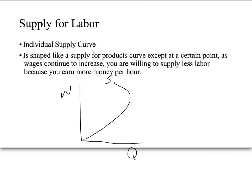Supply for labor. To start off with, looking at an individual supply curve, you might notice that it looks a little bit different than what we've been talking about with supply curves in the product market. It's shaped like a supply curve for the product market, except at a certain point, as wages continue to increase, you're willing to supply less labor because you earn more money per hour or more per unit of time.